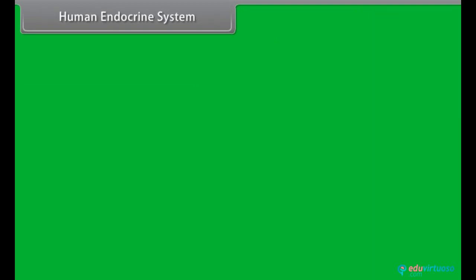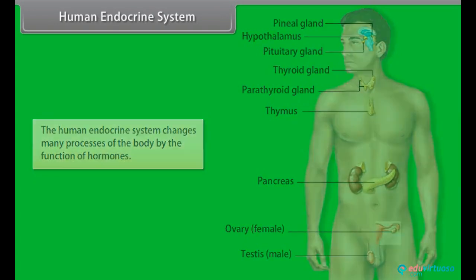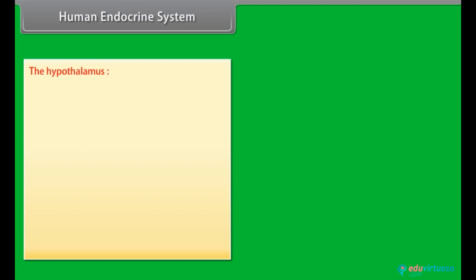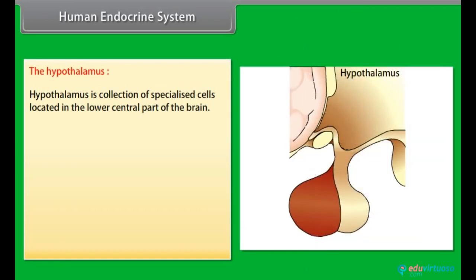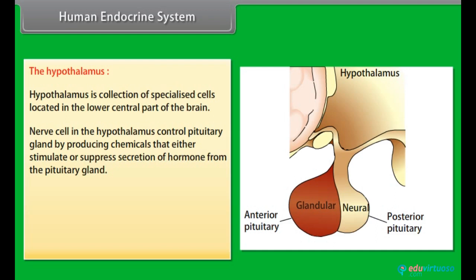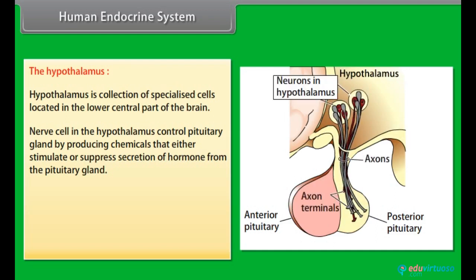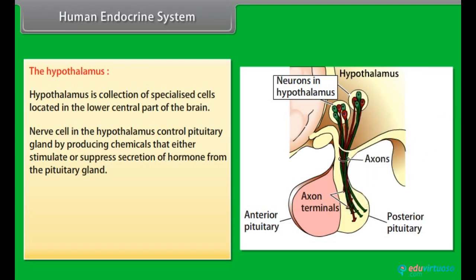The human endocrine system changes many processes of the body through the function of hormones. The hypothalamus is a collection of specialized cells located in the lower central part of the brain. Nerve cells of the hypothalamus control the pituitary gland by producing chemicals that either stimulate or suppress secretion of hormones from the pituitary gland.